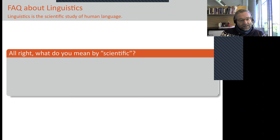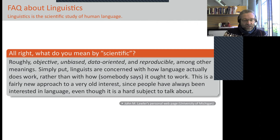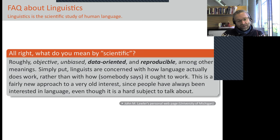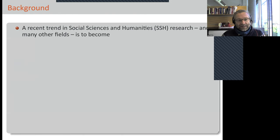The next part of the question is what do we mean by 'scientific'? The answer at the time was roughly that it is objective, unbiased, data-oriented, and reproducible. Simply put, linguists are concerned with how language actually does work rather than how others say it ought to work. I keep coming back to the idea that science — whether you work with computers or not — ought to be data-oriented and reproducible.